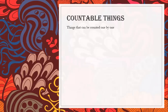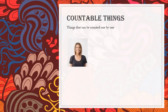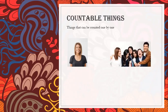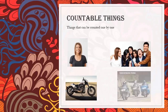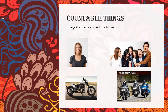Let's start with countable nouns. What is a countable thing? Those are things that can be counted one by one. For example, 'person' — can we count people? Yes! One person, two people, three people. Here we have one person versus six different people. Another example: motorcycle. One motorcycle, three motorcycles. Those are countable nouns.